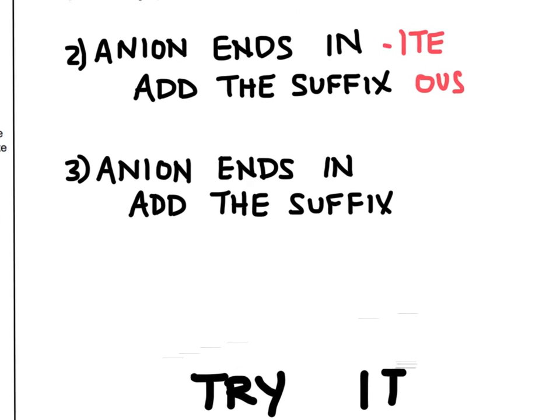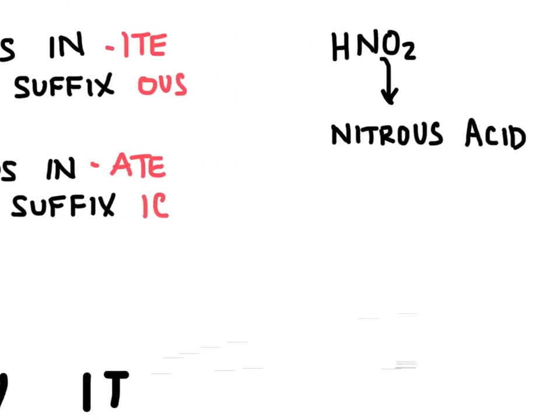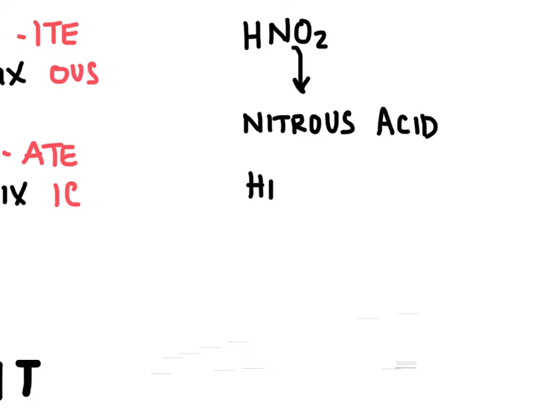And then here's the last rule. If the anion ends in ate, we're going to add the suffix ic. And so for example, we have HNO3, and this anion is called nitrate. So we're going to remove the ending here of ate and change that to ic. We'll add the word acid.